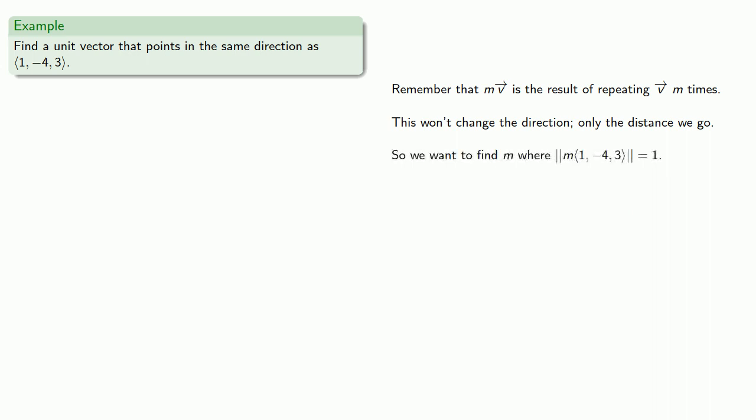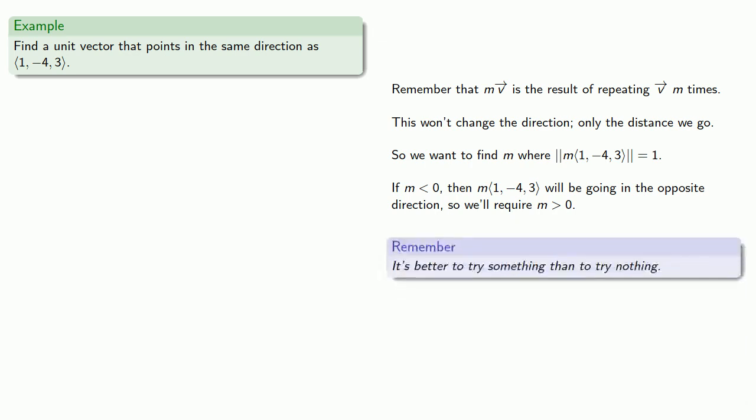And so thinking about this, we want to find m where the magnitude of m·v is equal to 1. Now, we also might throw in one other idea. If m is less than 0, then m times the vector will have us going in the opposite direction. So we'll require that m be greater than 0. Will this work? I don't know. But remember, it's better to try something than to try nothing.